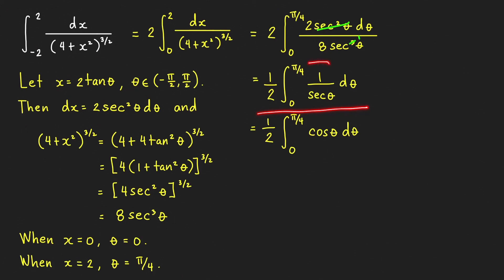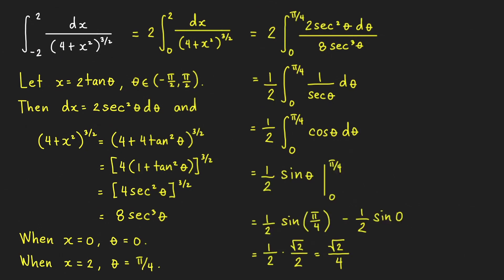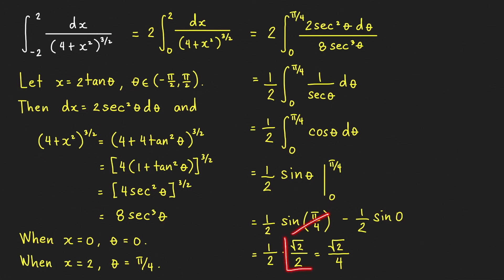Since 1 over secant theta equals cosine theta, we can easily evaluate this definite integral. The antiderivative of cosine theta is sine theta, evaluated from 0 to pi over 4. We get one-half times sine of pi over 4 minus sine of 0. Sine of pi over 4 equals square root of 2 over 2, and sine of 0 equals 0. Therefore, the value of our definite integral is square root of 2 over 4.